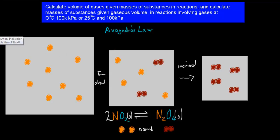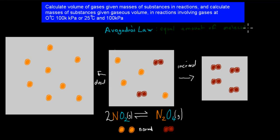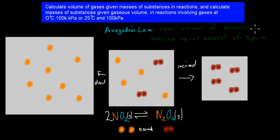I'm going to talk about something called Avogadro's Law. Avogadro's Law says that equal amounts of molecules take up equal amounts of space. It doesn't say anything about what type of molecules — so the size or the mass of the molecules does not matter. Mass or size is not important; that is not given in Avogadro's Law.